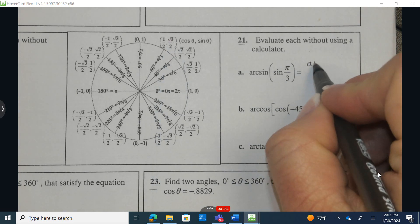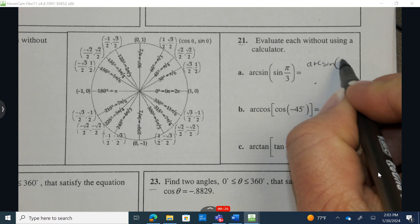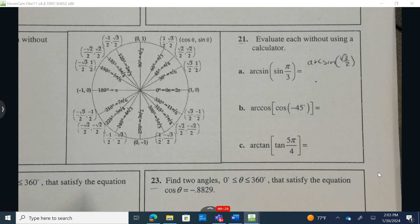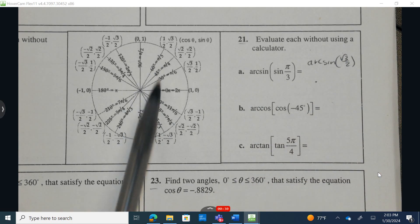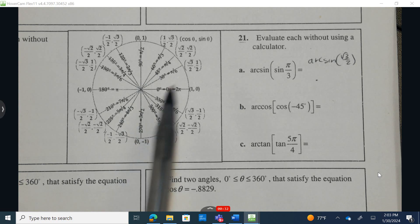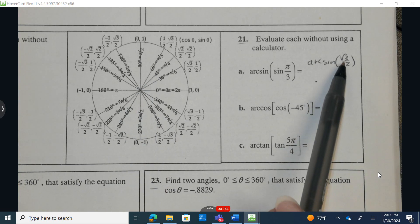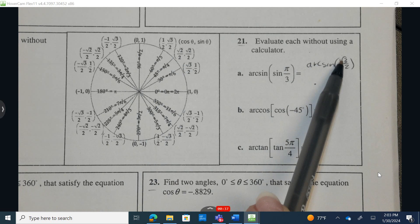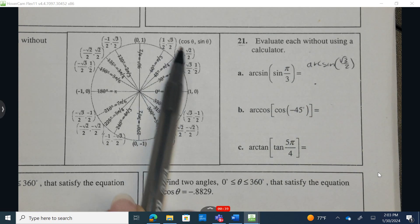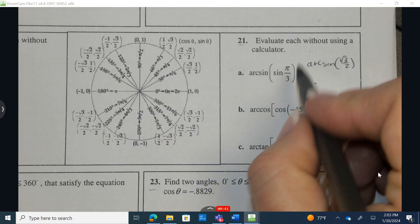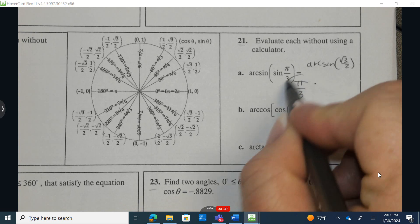So it's going to be arc sine of radical 3 over 2. Remember that arc sine only occurs in quadrants 1 and 4. So where can I find a positive sine that's only going to be in quadrant 1? That is radical 3 over 2. That's going to be right here again at pi over 3.